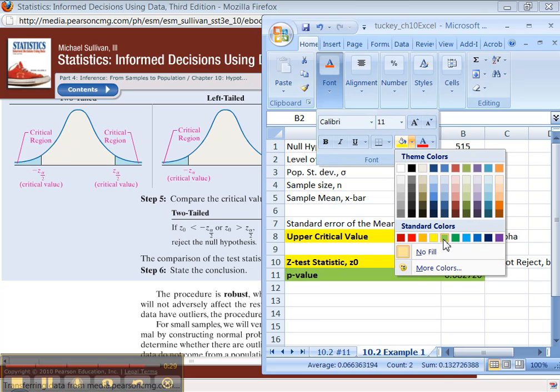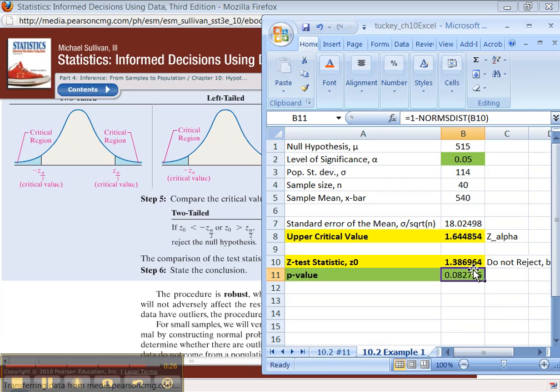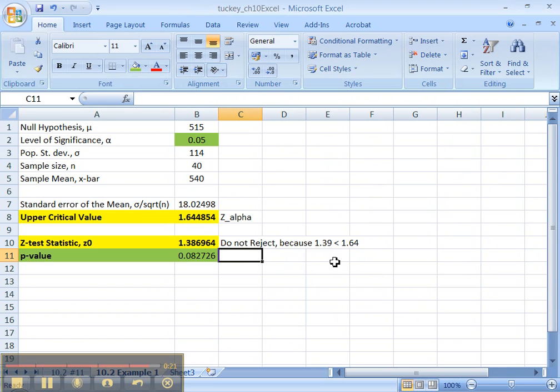Compare these two scores right here. If this .08 is lower than .05, you would reject, but it's not. So you do not reject because p equals 0.08 is greater than 0.05, which is alpha. It has to be less than to warrant rejection by the p-value method. Alright. We're done with that problem. I'll see you here next time.